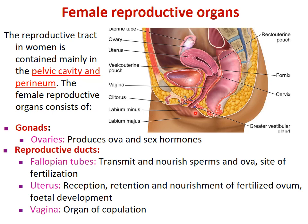Perineum is the region that is below the urogenital diaphragm. From the pubic symphysis to the coccyx, we have a muscular partition called the urogenital diaphragm. Below that diaphragm is a very small area in the female with openings only, but in males the perineum contains the external genitalia — the penis and scrotum are the contents of the perineal region.